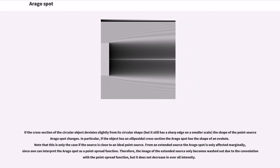If the cross section of the circular object deviates slightly from its circular shape, the shape of the point source Arago spot changes. In particular, if the object has an ellipsoidal cross section, the Arago spot has the shape of an evolute. Note that this is only the case if the source is close to an ideal point source. From an extended source, the Arago spot is only affected marginally, since one can interpret the Arago spot as a point spread function. Therefore, the image of the extended source only becomes washed out due to the convolution with the point spread function, but it does not decrease in overall intensity.